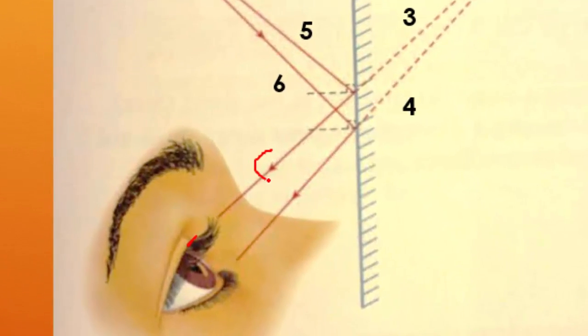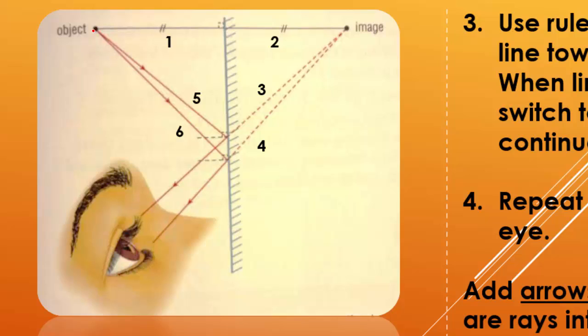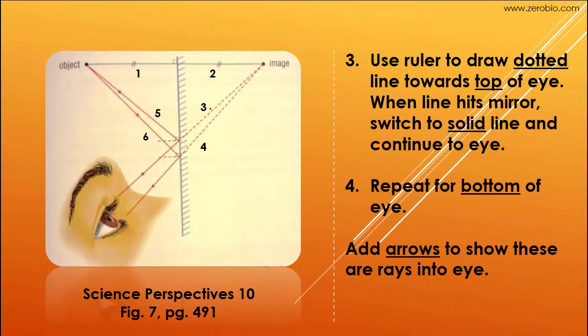Don't forget that you're also going to need to add arrows. So that's my next point on here, to add arrows, because the light is actually coming from the object, it's bouncing off the mirror, and it's going into your eye. Light goes into your eye. So add these arrowheads here to show the direction of the light. So go ahead and do step 3 and 4, pause the video, before going on to step 5 and 6.